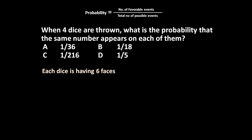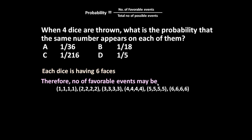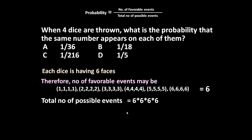Each dice has six faces. The favorable events are: all four dice show one, or all four show two, all four show three, four, five, or six. These are the six possible combinations in our favor. So the number of favorable events is six.